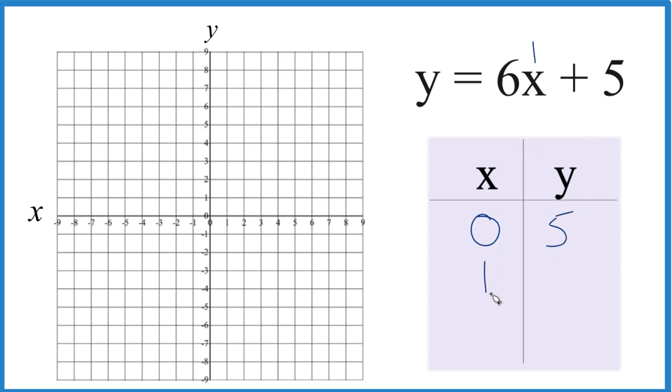Let's put 1 in here. 6 times 1, that's 6. 6 plus 5 is 11, but that doesn't fit on my graph paper. So I think what I'll do is do negative 1. 6 times negative 1 is negative 6. Negative 6 plus 5, that gives me negative 1. That'll fit.